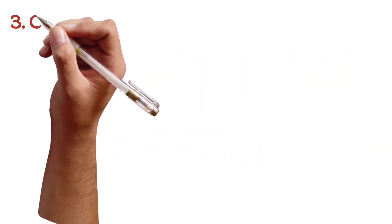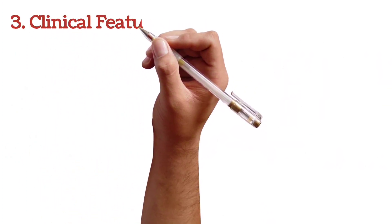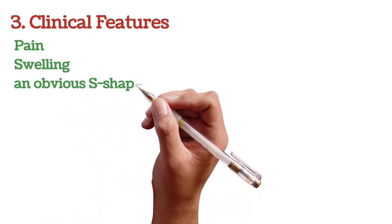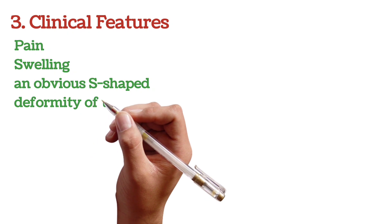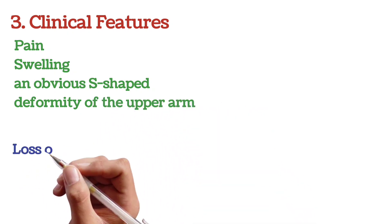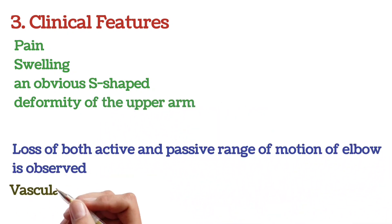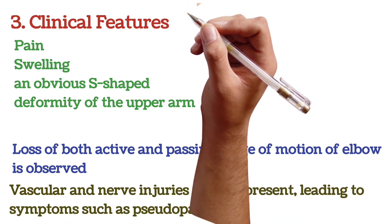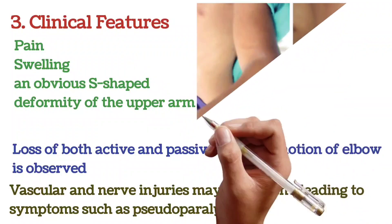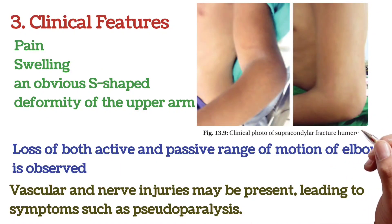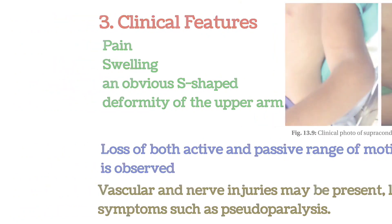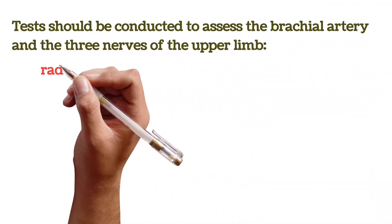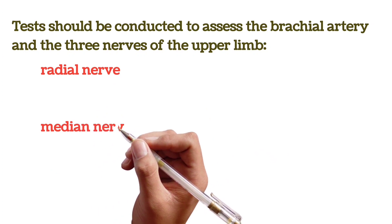Clinical features: Patients with supracondylar fractures may experience pain, swelling, and an obvious S-shaped deformity of the upper arm. Loss of both active and passive range of motion of the elbow is observed. Vascular and nerve injuries may be present, leading to symptoms such as pseudoparalysis. Tests should be conducted to assess the brachial artery and the three nerves of the upper limb: radial, median, and ulnar.